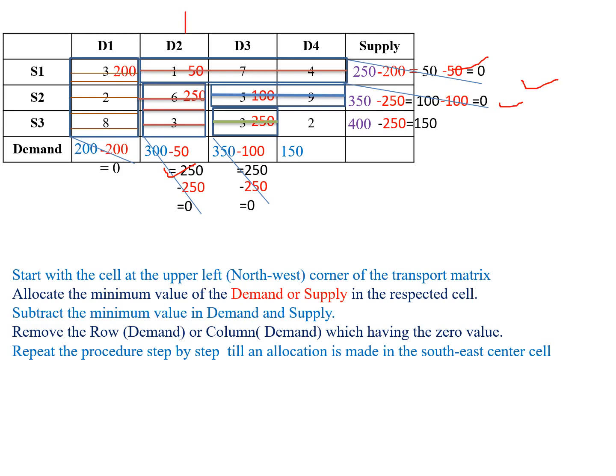Next, only one cell remains with cost value 2, which is the upper-left corner of the transportation matrix. Both demand and supply are 150. We allocate 150 in that cell. Subtracting 150 from supply and demand gives 0 and 0. The procedure is now complete.